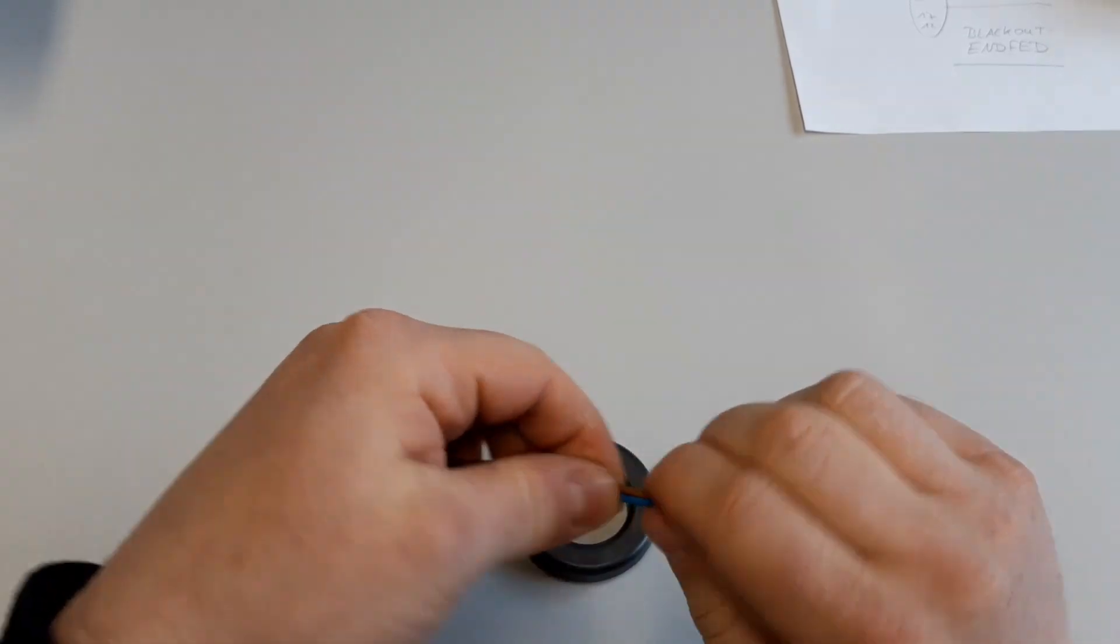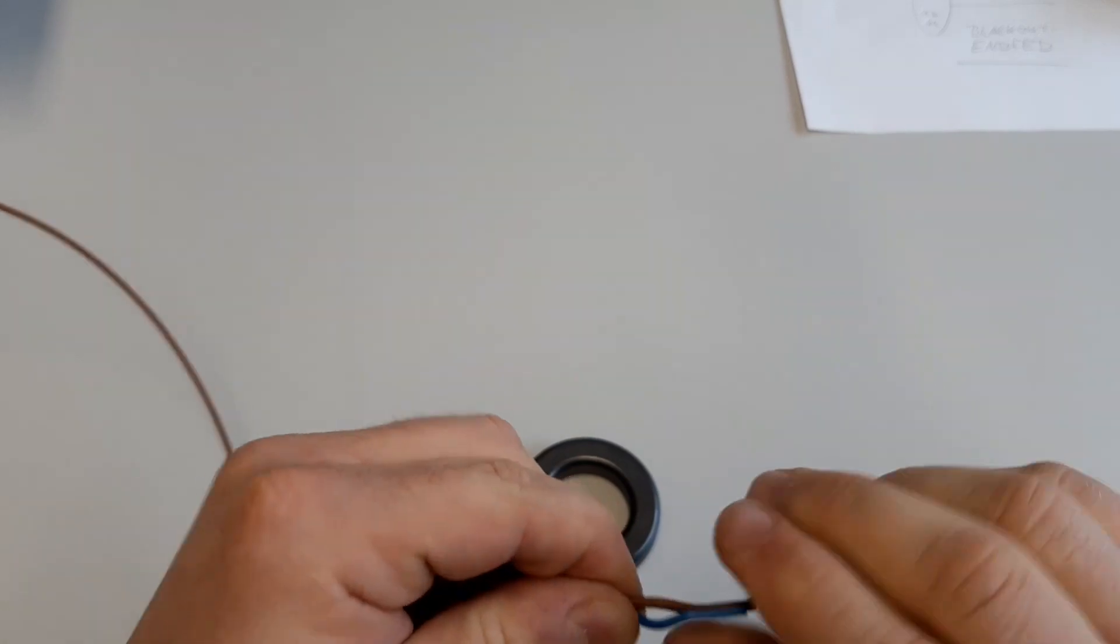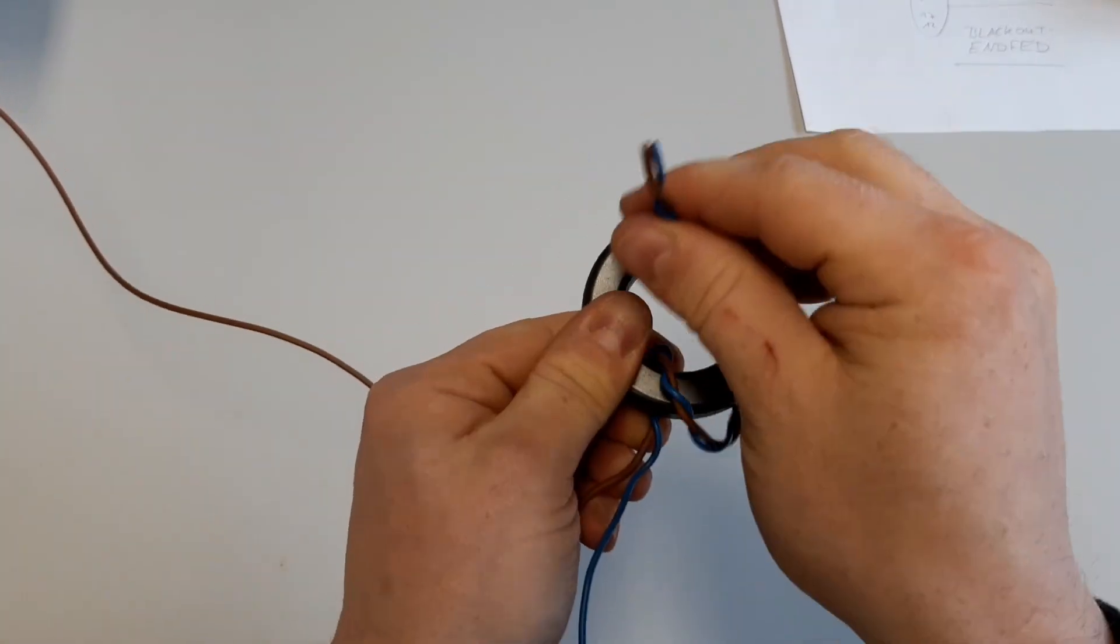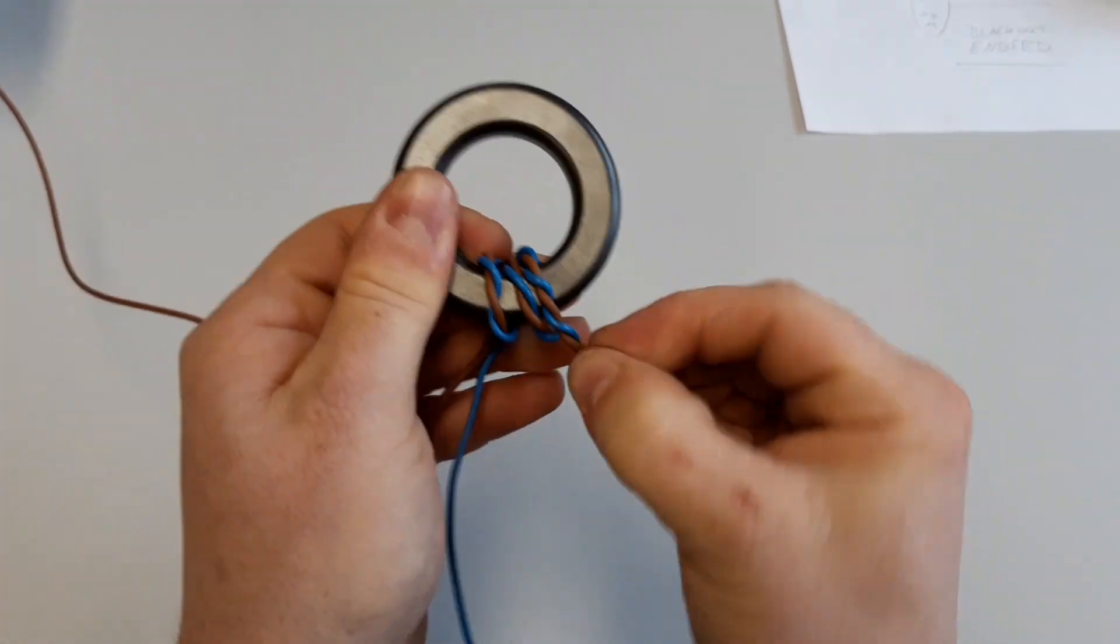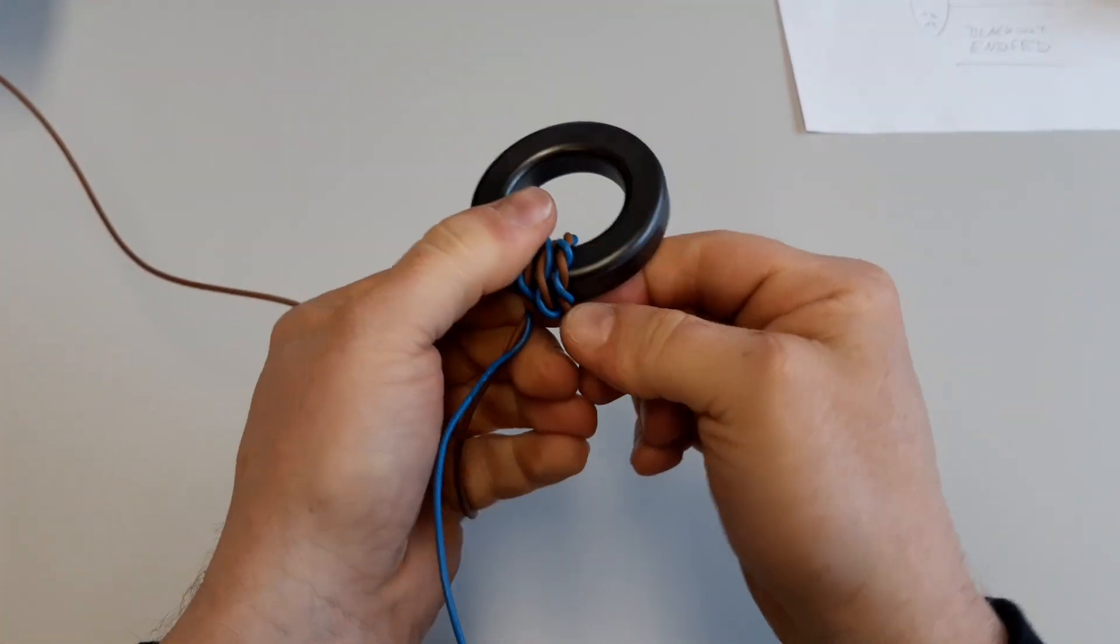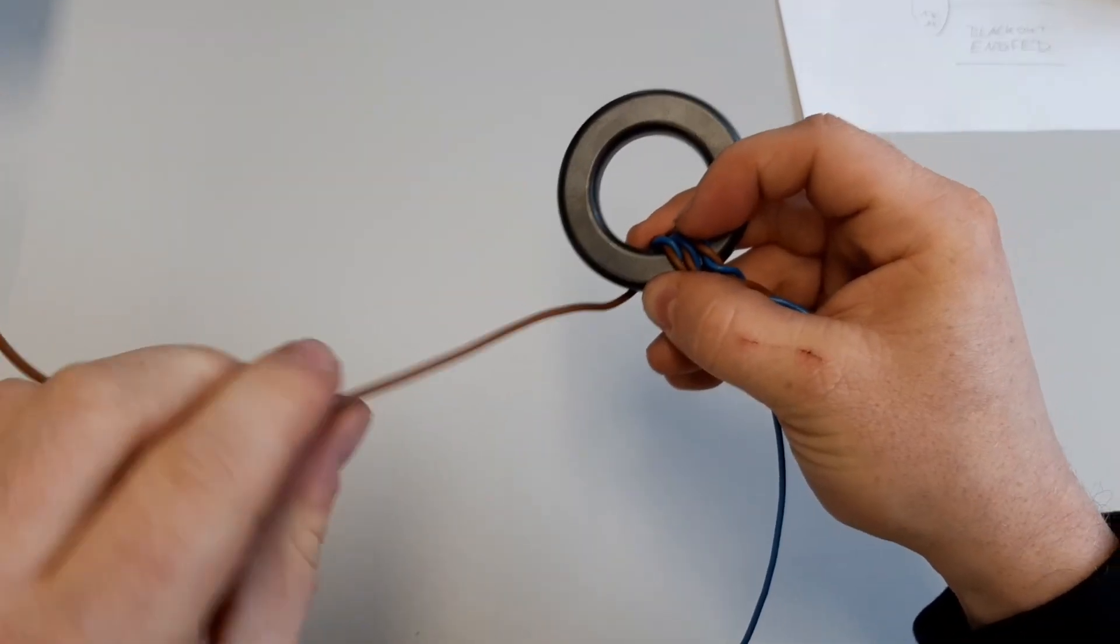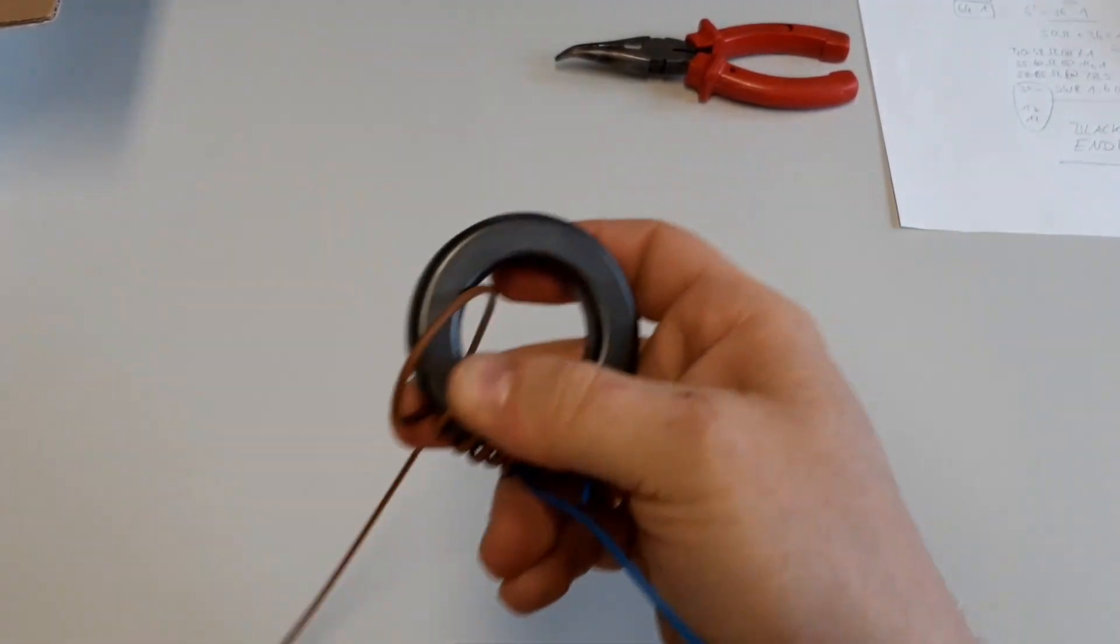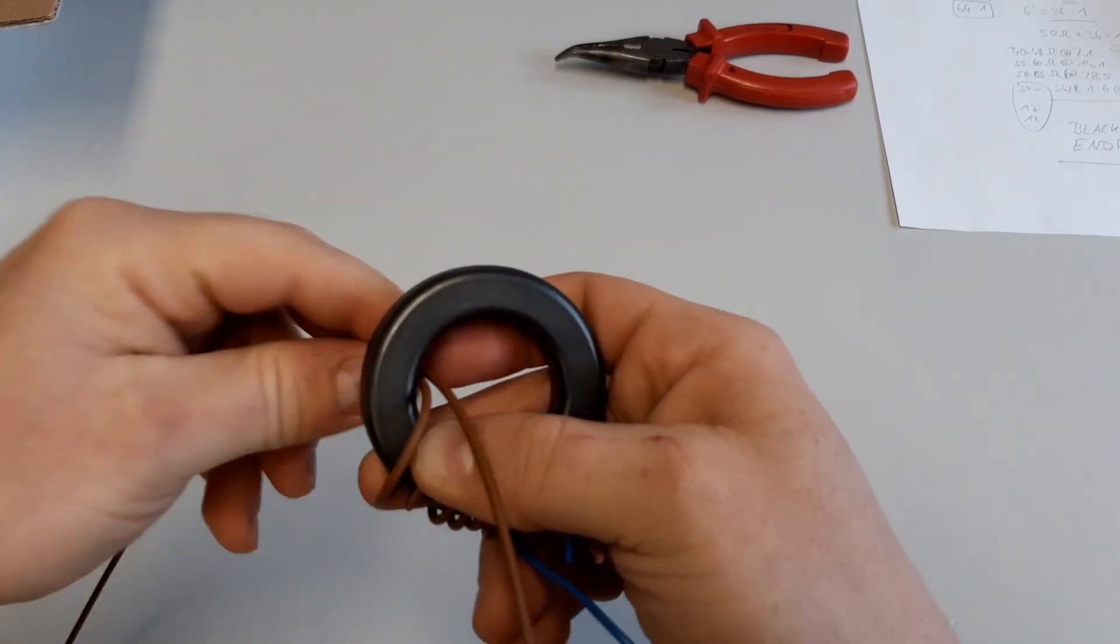I will demonstrate that with two different colored wires because it's a lot more easy to see what I'm doing here. This is one winding, number two, and finally number three. We go further with this wire here, this is number one, number six, and finally the number seven.